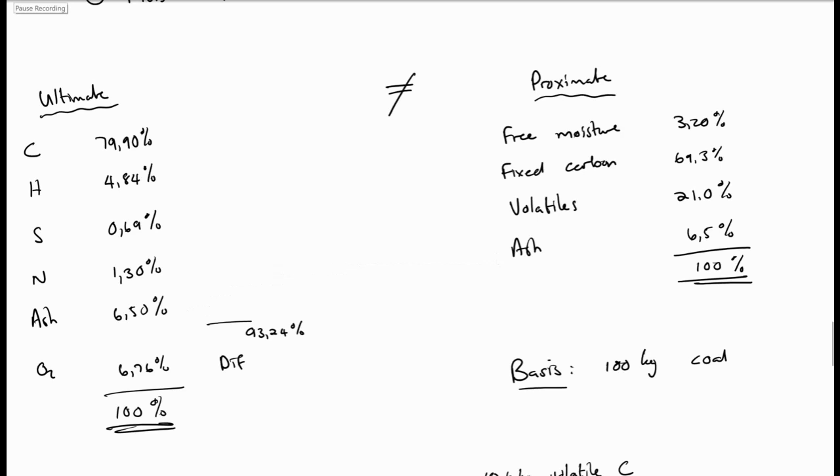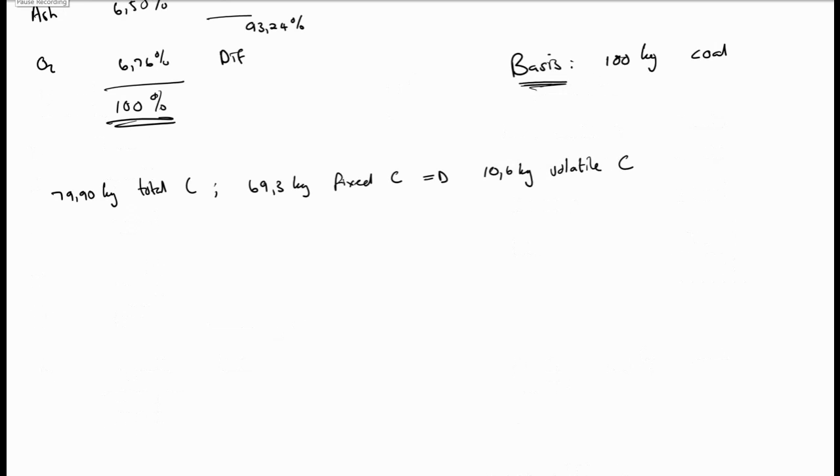Let's now calculate the complete coal analysis and we start by choosing a basis of 100 kg coal so that we can do our calculations easily. Let's start by saying that there is 79.90 kg total carbon and 69.3 kg of fixed carbon which means that we will have 10.6 kg of volatile carbon.